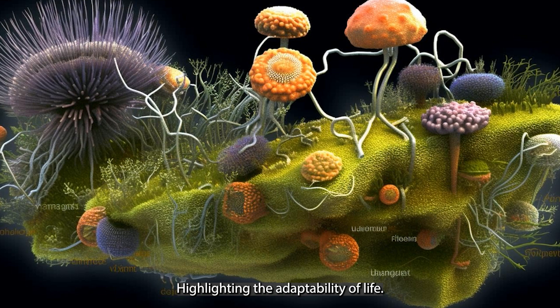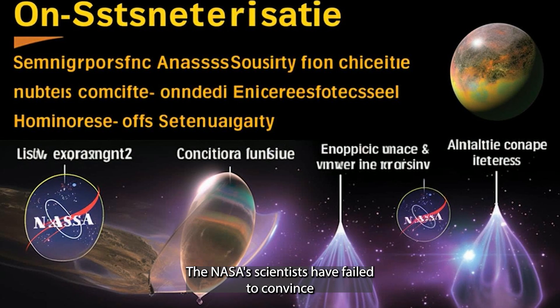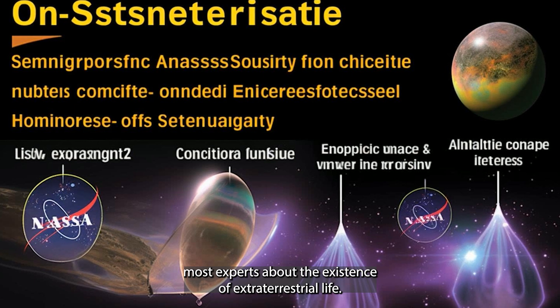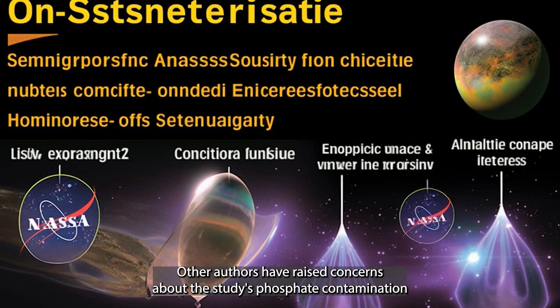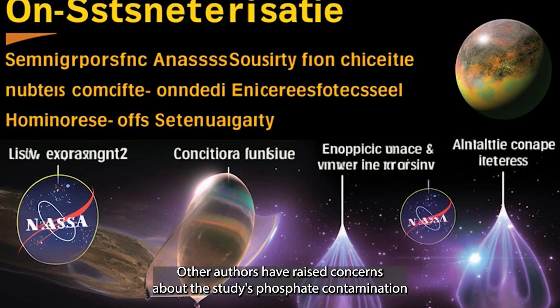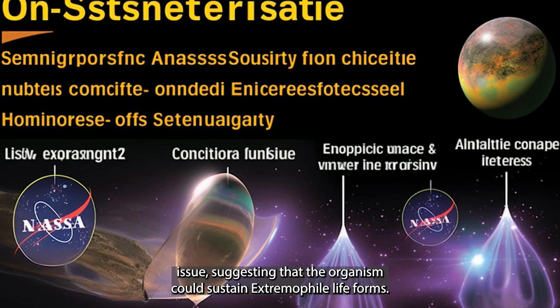Arsenic, while toxic to many organisms, is incorporated into the biochemistry of some marine algae, fungi, and bacteria, highlighting the adaptability of life. The NASA scientists have failed to convince most experts about the existence of extraterrestrial life. Other authors have raised concerns about the study's phosphate contamination issue, suggesting that the organism could sustain extremophile life forms.